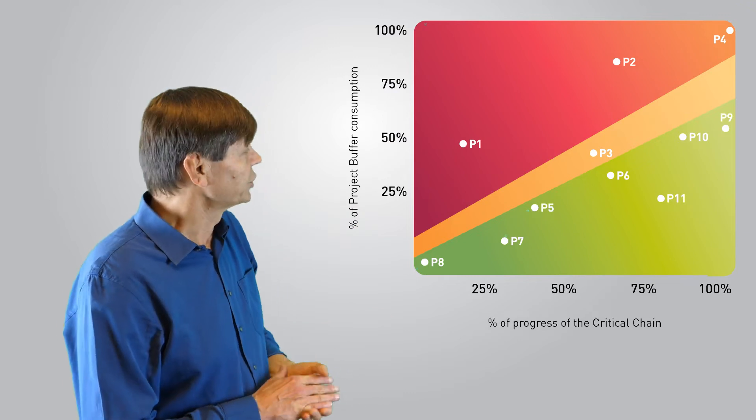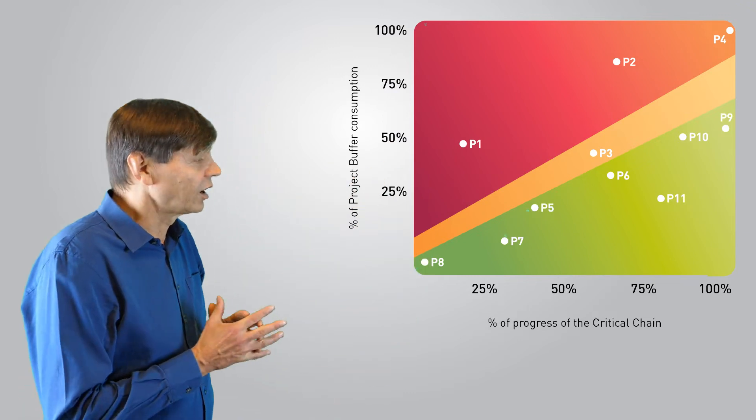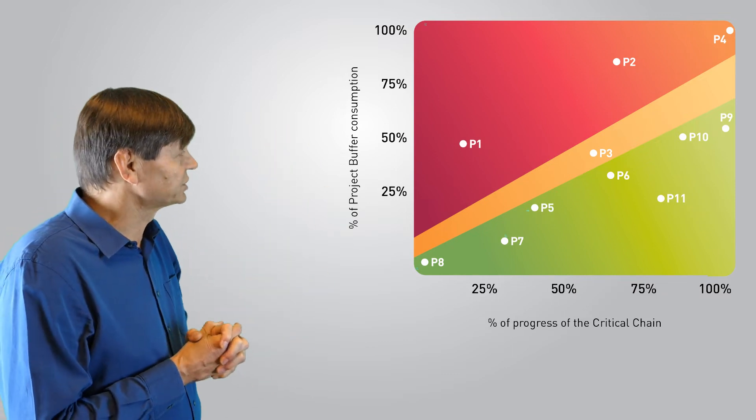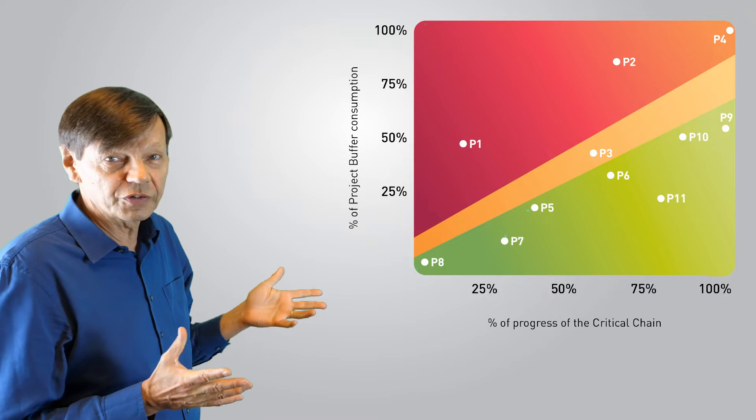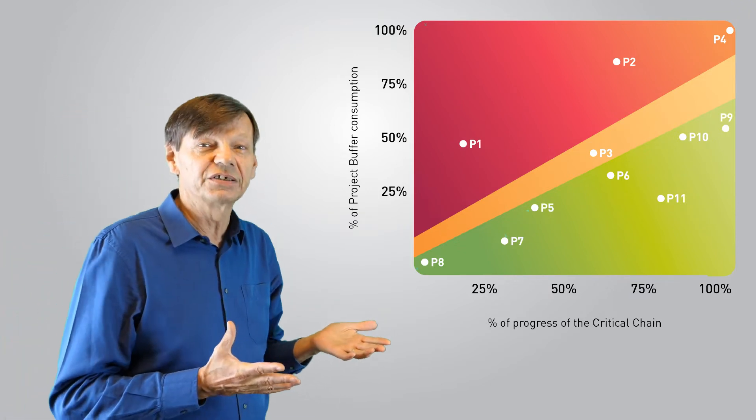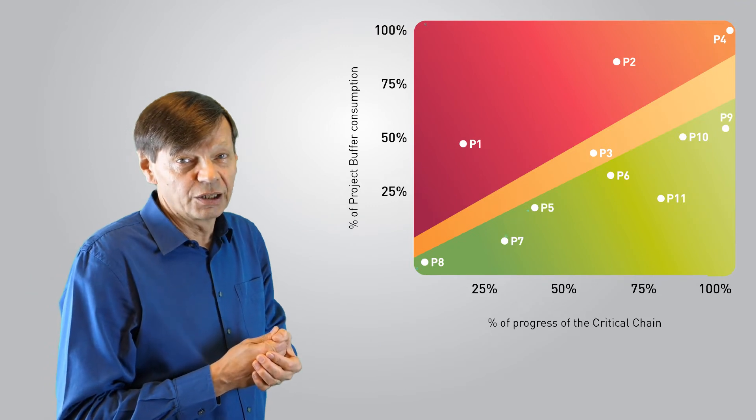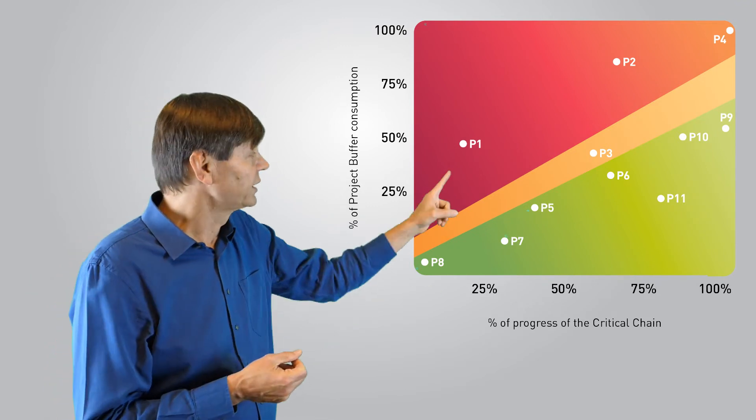So here we have the beginning of our monthly project management meeting. What do you think is the project that is in difficulty, which is the priority in everything that we have here? Would you not agree that it's project one here?